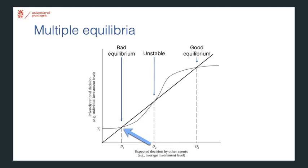This also suggests that you need a big push. If you have a small policy change that might induce, that could shift the privately rational decisions, as long as you don't pass this unstable equilibrium point, you will always drop down back to this bad equilibrium.